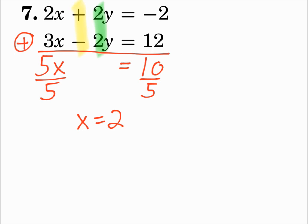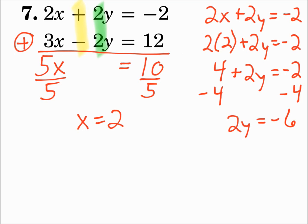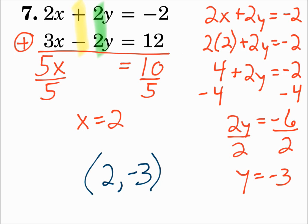Now substitute x into either equation — put it in the first one. 2x plus 2y equals negative 2, x is 2, so we'll substitute 2 in for x. Now solve for y. 2 times 2 is 4. Subtract 4 from each side, divide each side by 2, and y is negative 3. Write your final answer as an ordered pair: 2 comma negative 3.